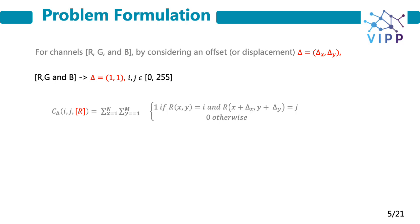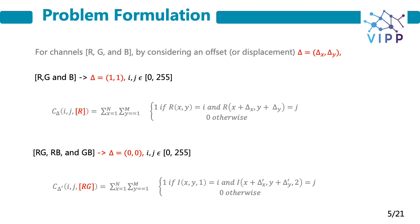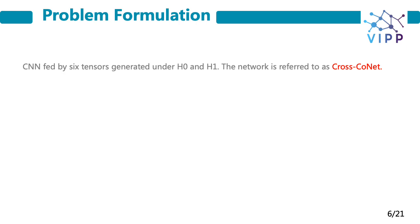Formally, given an image I, let R, G, and B denote respectively the 2D matrix for red, green, and blue channel. Given offset or displacement delta, the spatial co-occurrence matrix for R, G, and B is computed as the following formula; we consider displacement (1, 1). A similar definition can be given for channels G and B. We define the cross-band spectral co-occurrence matrix for the pair of channels R and G, and consider displacement (0, 0); a similar definition is given for RB and GB. The input to the proposed network is therefore a tensor of 6 co-occurrence matrices of size 256×256×6. The network is referred to as Cross-CoNet.